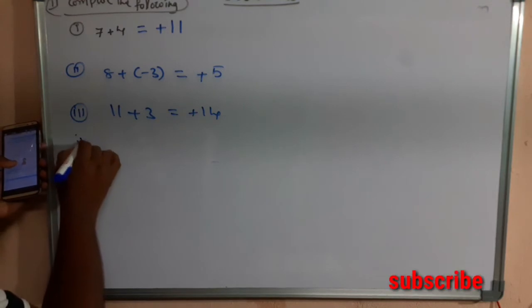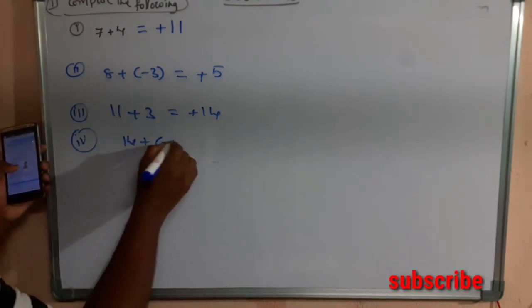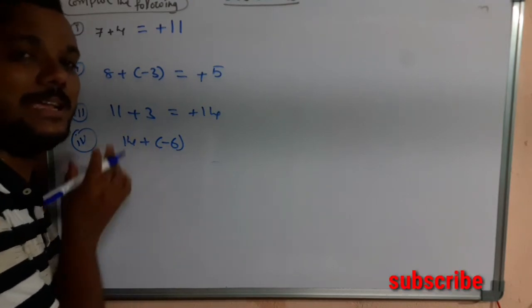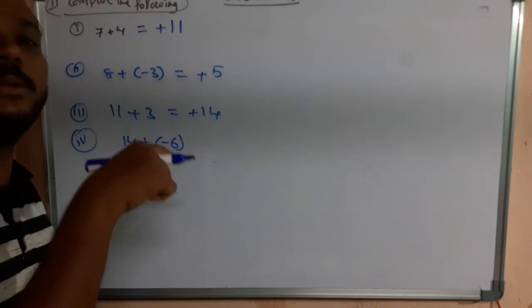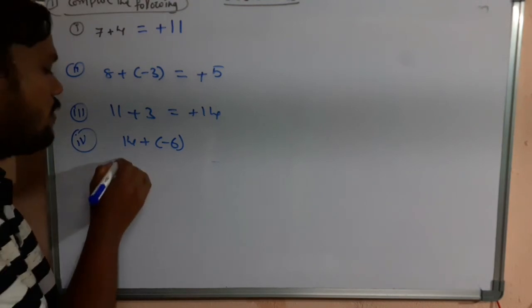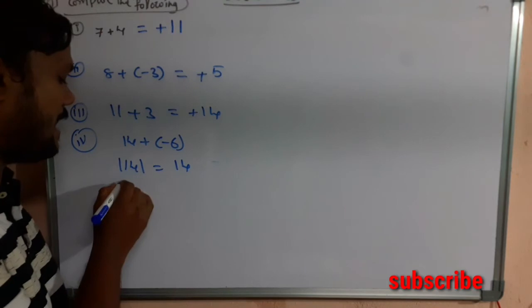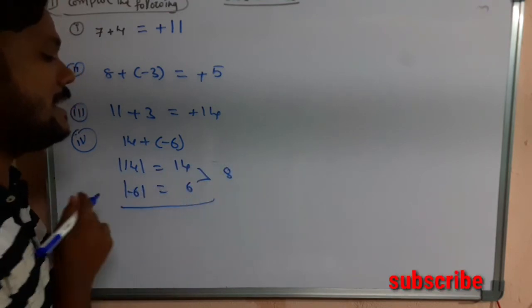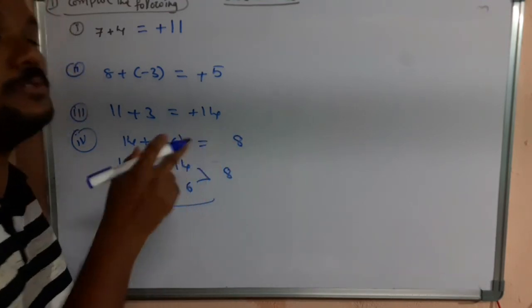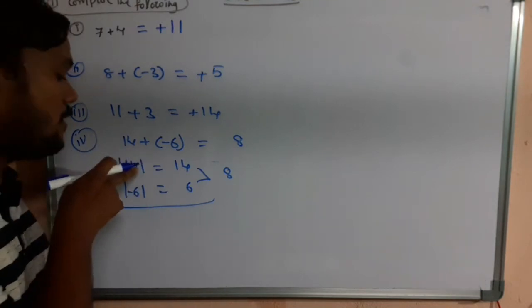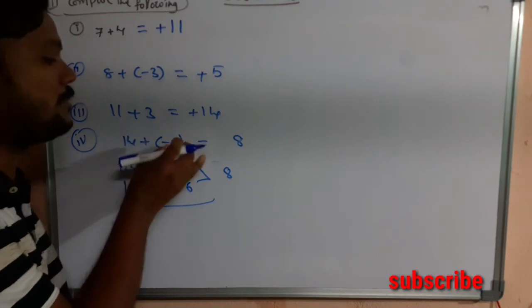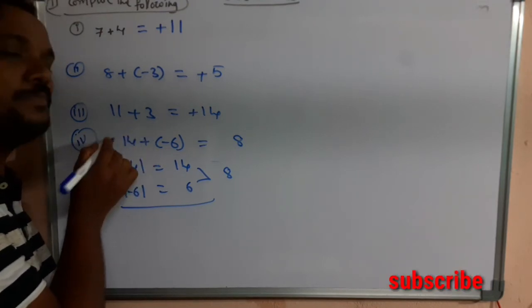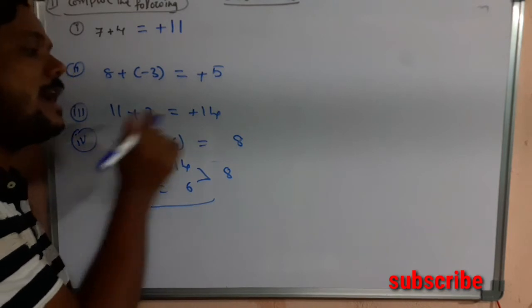The fourth question is 14 + (-6). Since 14 is positive and -6 is negative, these are unlike integers. Take the difference between their absolute values: absolute value of 14 is 14, absolute value of -6 is 6, and the difference is 8. Since 14 has the greater absolute value and is positive, the answer is +8.